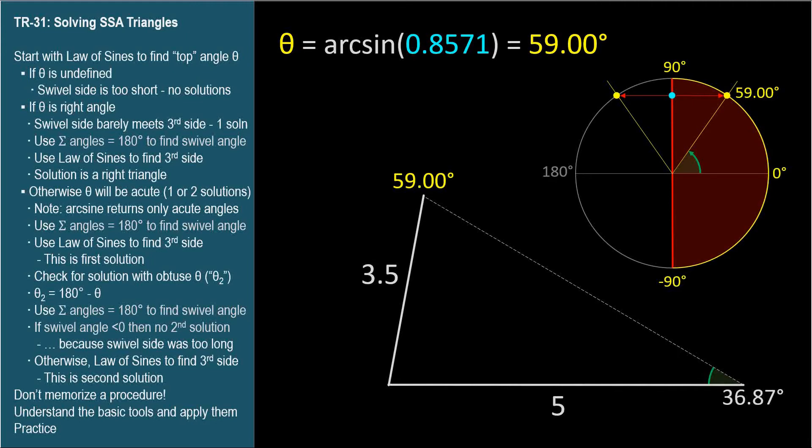We can find its measure by using symmetry about the y-axis. The first angle is 59 degrees forward from the zero angle. So, this angle is 59 degrees back from 180 degrees. So, 121.00 degrees.